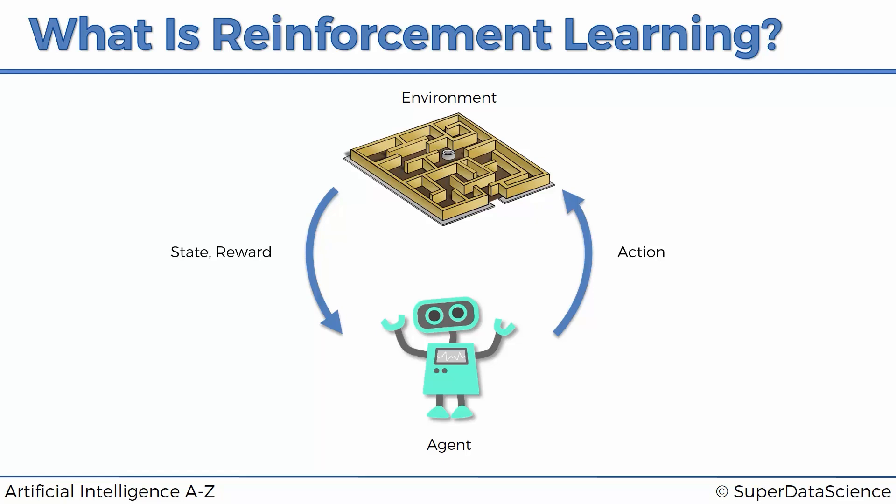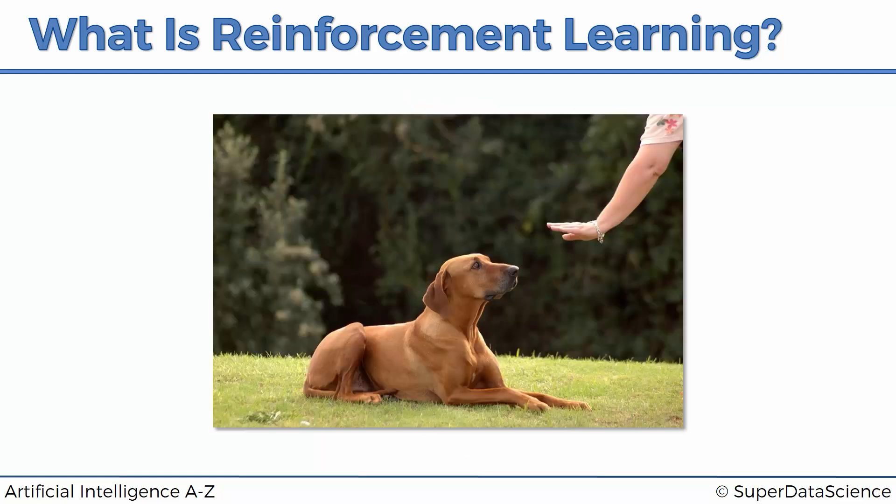In terms of AI, the simplest way to think of reinforcement learning is like training a dog. When you train a dog, you give it certain commands. If it obeys those commands, you give it a treat — like a biscuit. If it doesn't obey, you tell it it's a bad dog or just don't give it a treat. Through that process, it learns what actions it needs to take in certain states, which are the commands you're giving it, and based on that it gets certain rewards.